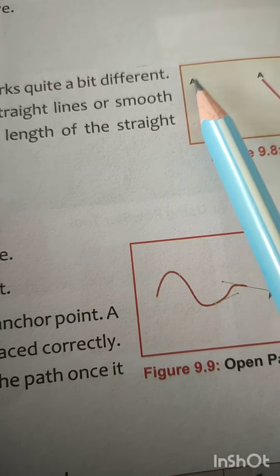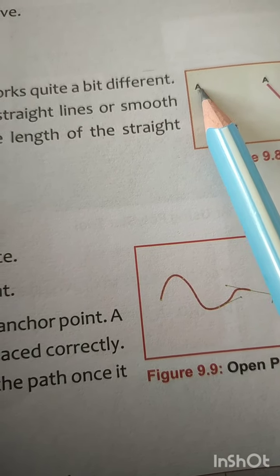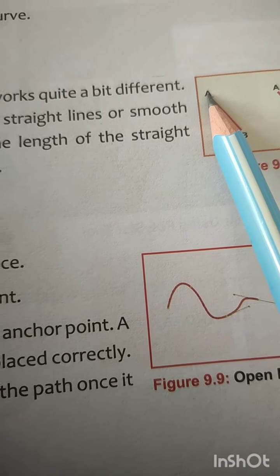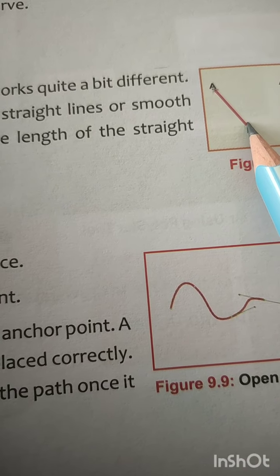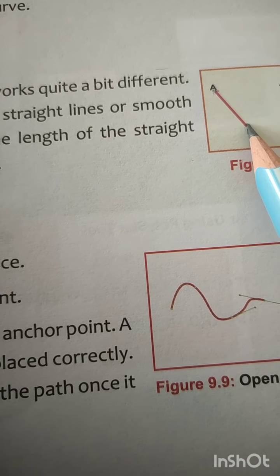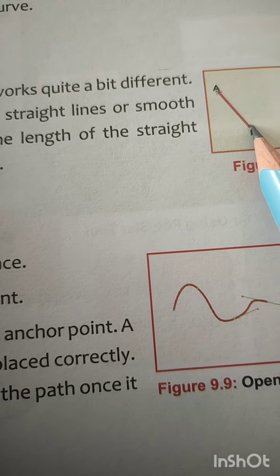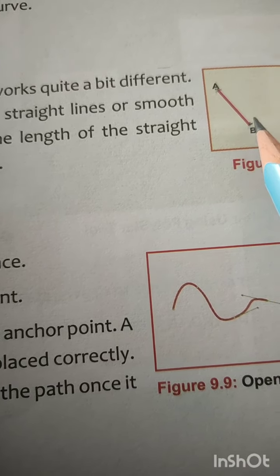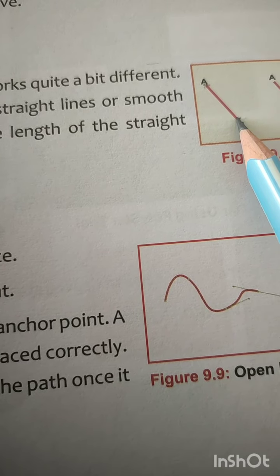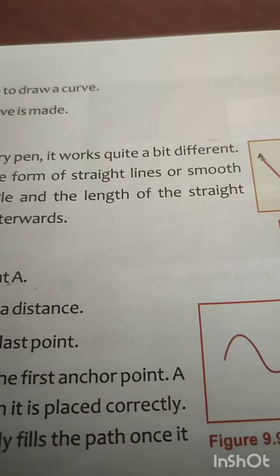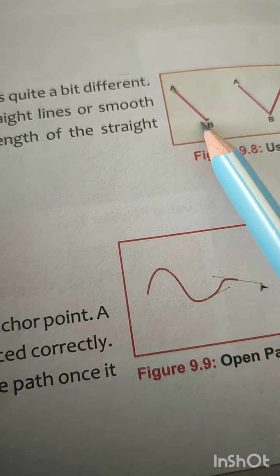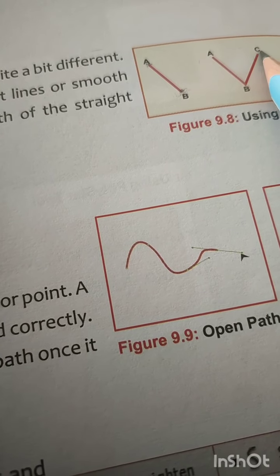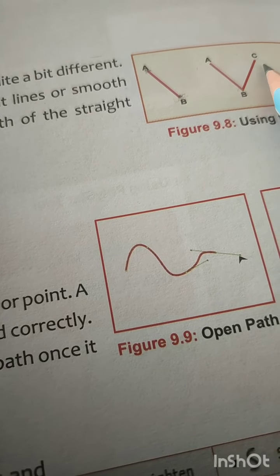First you click the anchor A — the point where you want to start the line — and that first point is known as your anchor point. Next, wherever you want to go, you click there. Suppose you want to go to a certain position: when you click that section, anchor point B is selected. As you click on B, you draw a line from A to B. Similarly, when you click on the next point C, you draw a line from B to C.